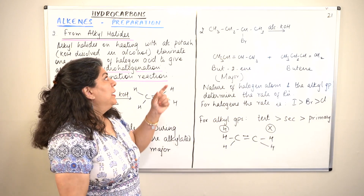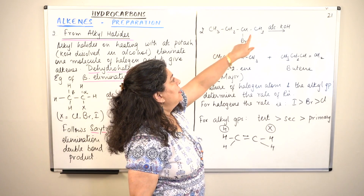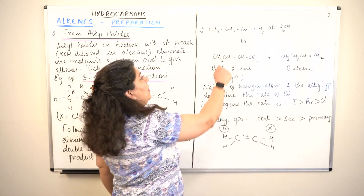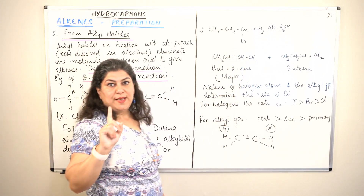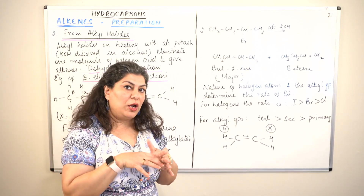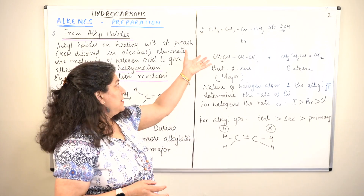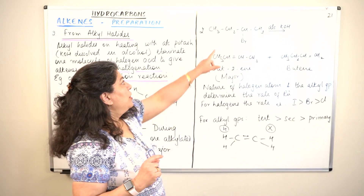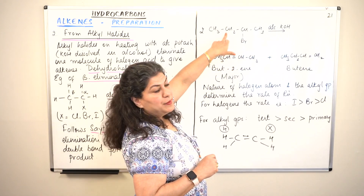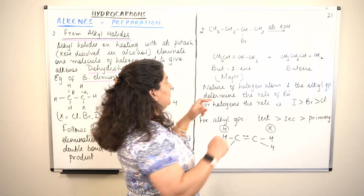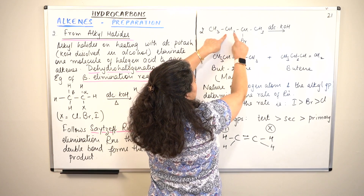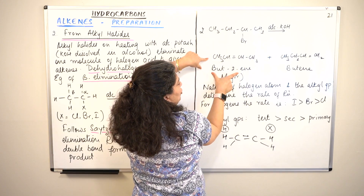Consider the example of 2-bromobutane: CH₃–CH₂–CH(Br)–CH₃. The carbon bearing bromine is the alpha carbon; the carbons on either side are both beta carbons. If the beta carbon on the methyl side loses a hydrogen, bromine and that hydrogen leave and you get but-2-ene: CH₃–CH=CH–CH₃.